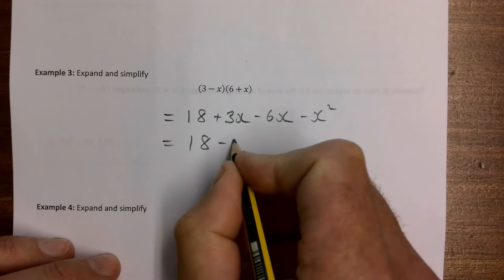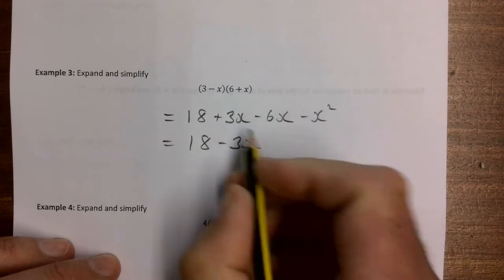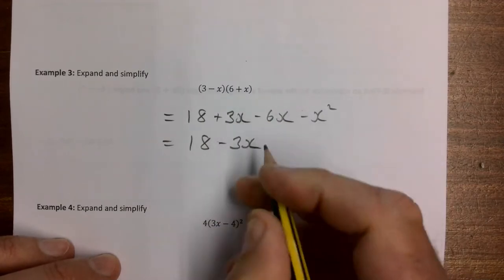That's going to give us 18 minus 3x. Again that's a tricky bit - 3x take away 6x gives us minus 3x, and then minus x squared.